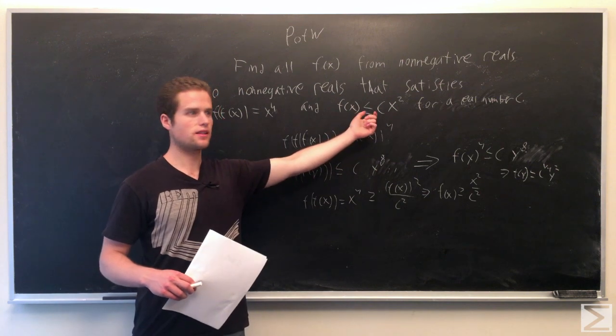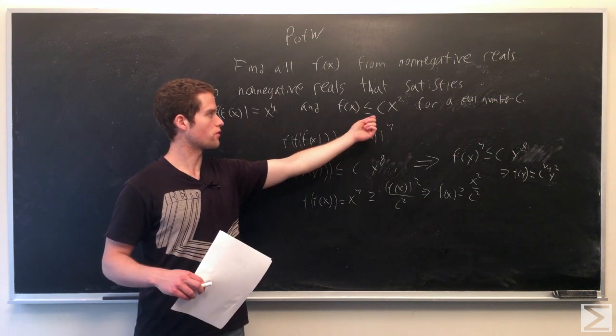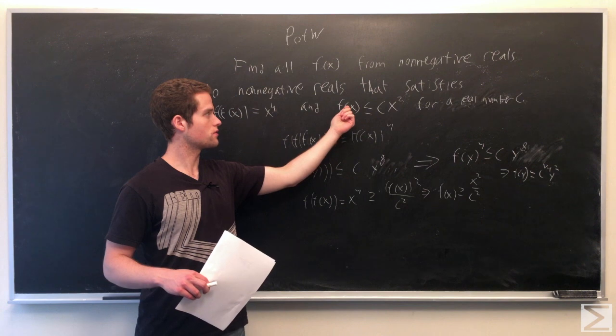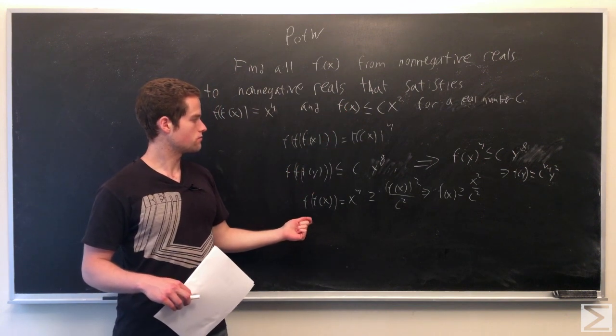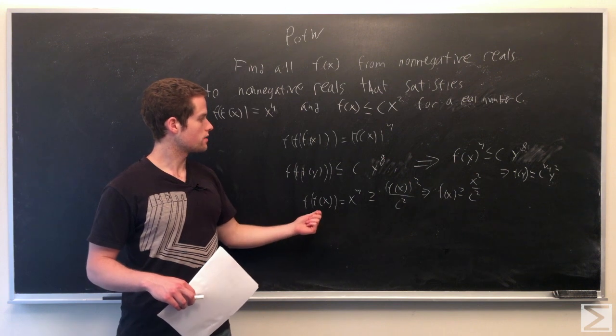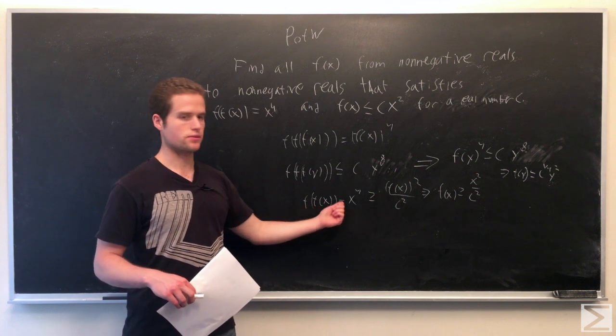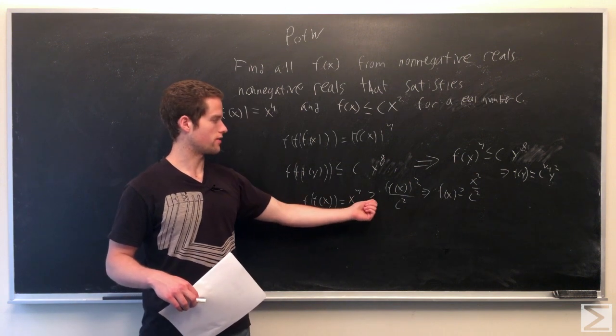Now, if we modify this inequality a little bit, bring the c over, we have x to the 4th is greater than or equal to f squared of x over c squared. And we also have f of f of x equals x to the 4th is greater than or equal to that.